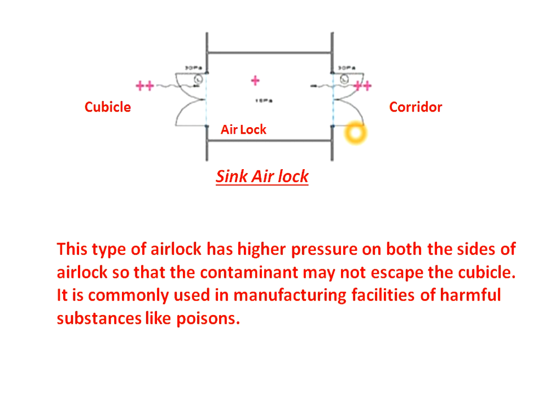The third type is sink airlock. In a sink airlock, the airlock has minimum pressure compared to its surrounding areas — the corridor and cubicle. The cubicle is indicated by two-plus and the airlock by one-plus. For example, if the airlock has 15 pascal pressure, the cubicle will have 30 pascal and the corridor will also have 30 pascal. This type is mostly used in areas where harmful substances are manufactured, such as poisons and other harmful medicinal products. This is all about today's topic — the concept of airlock and its function.